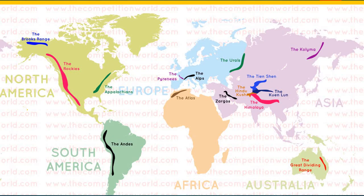We have different mountain ranges located all over the world. In North America, we have the Brooks Range, the Rockies, and the Appalachians. In South America, we have the Andes. For other parts, we have the Himalaya, the Great Dividing Range, and the Urals, among many others. Those are the major mountain ranges we can observe in different parts of the world.